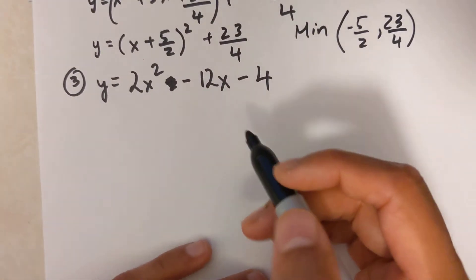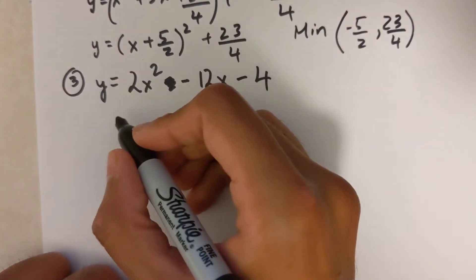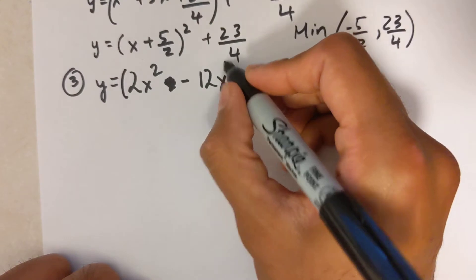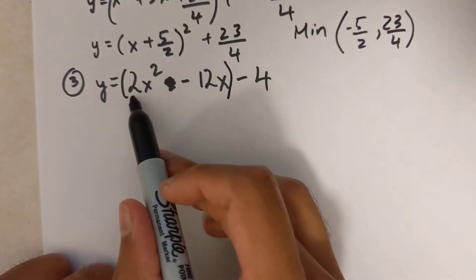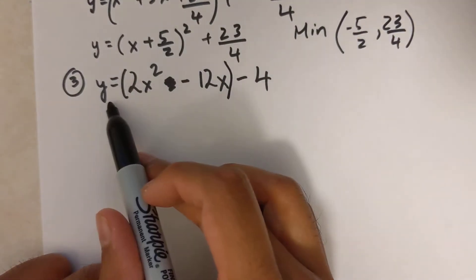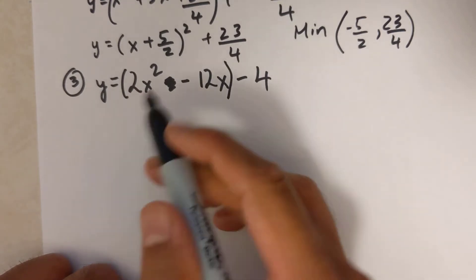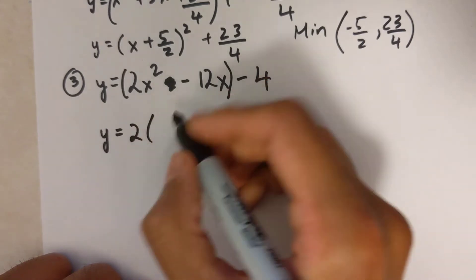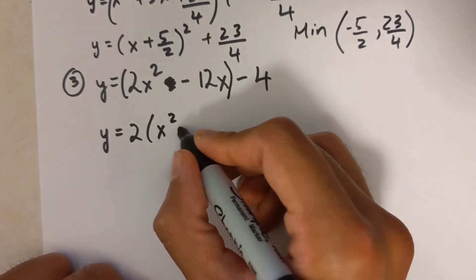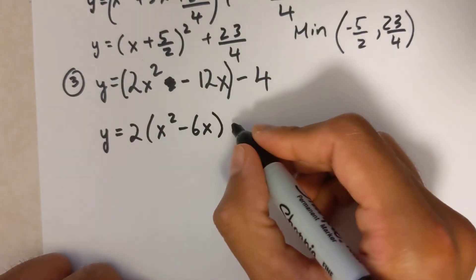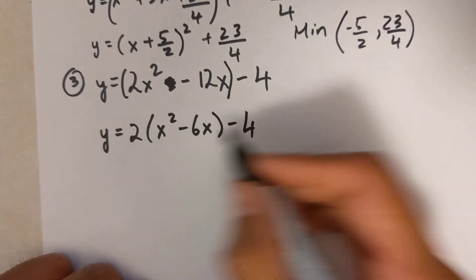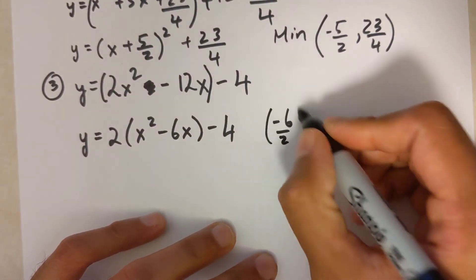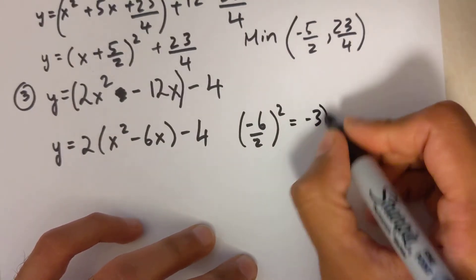For the third example I put a bracket, and now I have an a value of 2 which I have to factor out first. Taking the 2 out leaves x-squared minus 6x inside, minus 4 outside. Writing negative 6 on the side: divide by 2 to get negative 3, then square it to get positive 9.